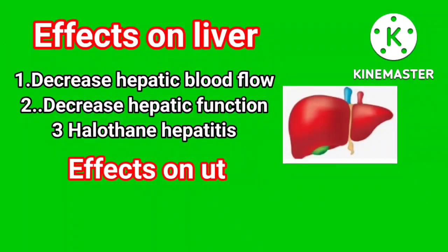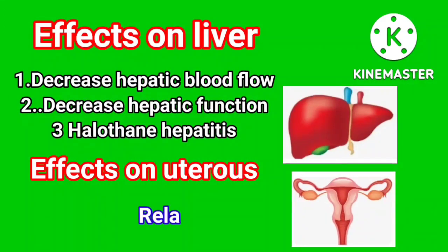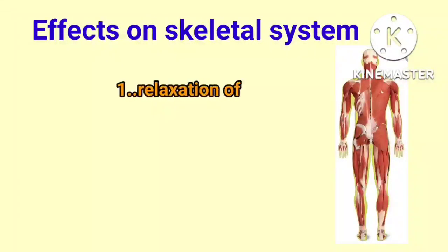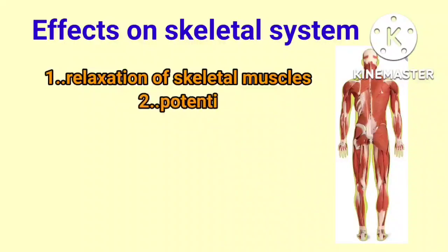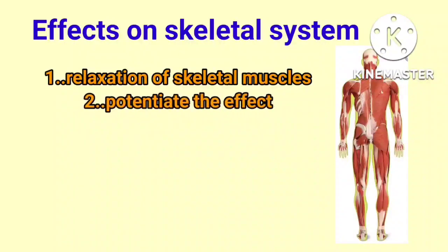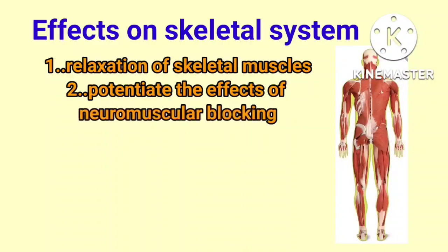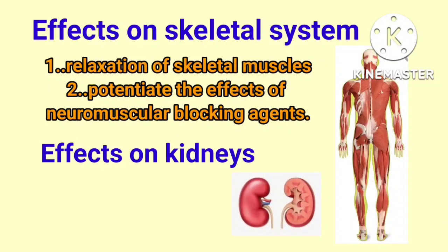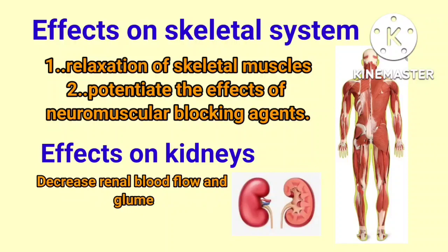Effect on the uterus: halothane relaxes uterine smooth muscles. Effects on the skeletal system: it causes relaxation of skeletal muscles and potentiates the effects of neuromuscular blocking agents. Effects on the kidneys: it decreases renal blood flow and glomerular filtration rate.